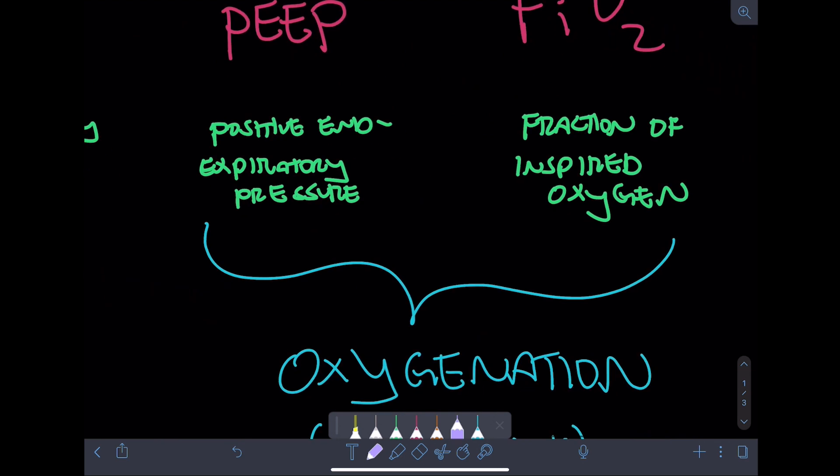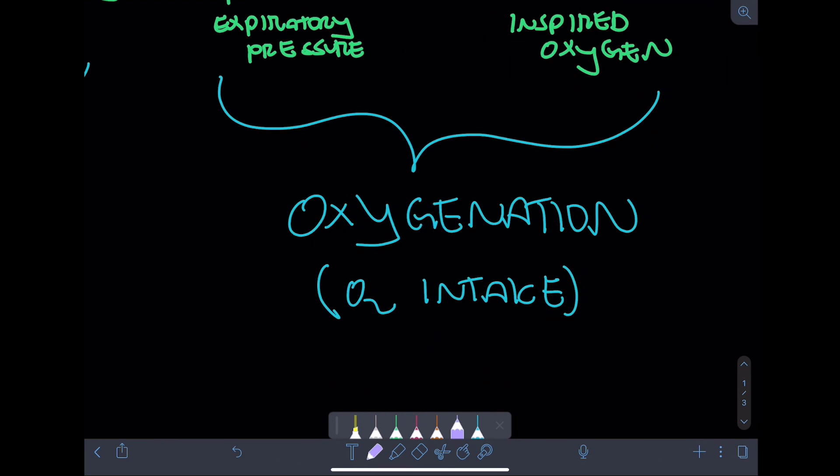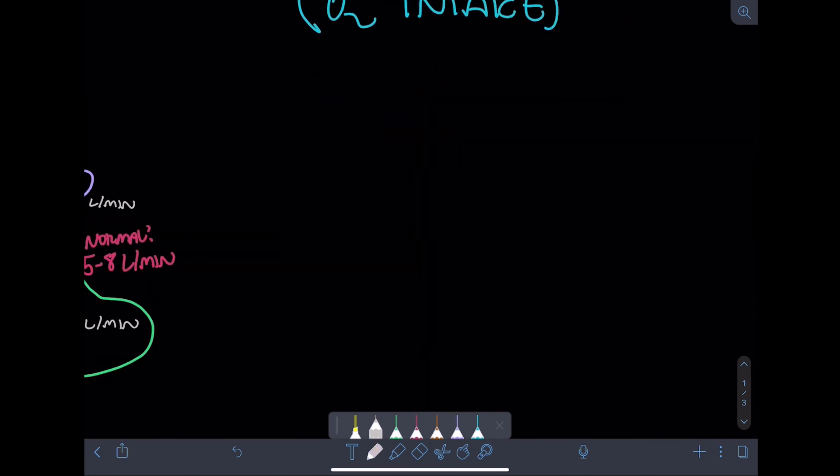The fourth setting, FiO2, is a fairly easy concept to grasp, so let's do that one first. FiO2 stands for fraction of inspired oxygen. It's expressed as a percentage, and it's just like what it sounds, the percentage of gas that you're delivering that's comprised of diatomic oxygen.